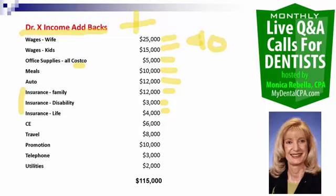CE, travel, promotion, telephone, and utilities — these are not really part of the true office overhead. These are some additional expenses, but we're trying to get down to the core. You can see we've got $115,000 of expenses that are actually clouding where this practice really stands. This is something I go through with my clients — really figuring out what their true overhead is and whether their percentages make sense for the practice.